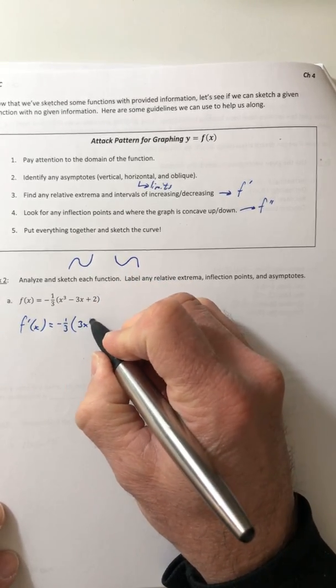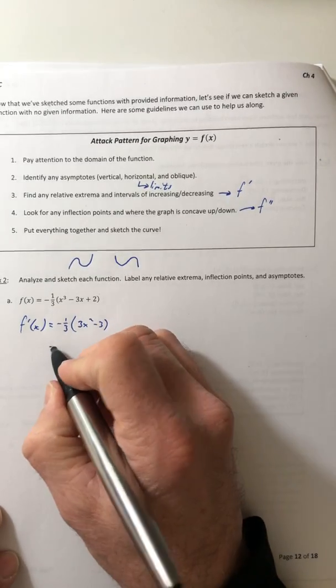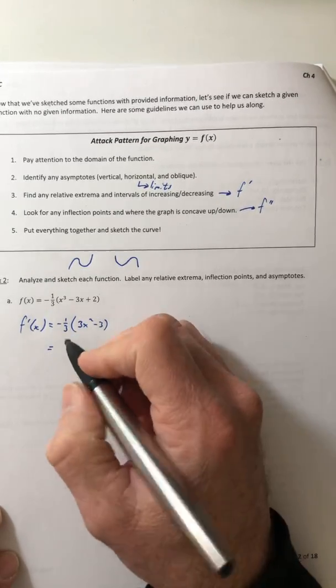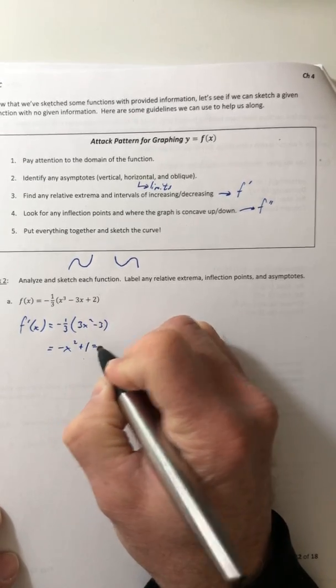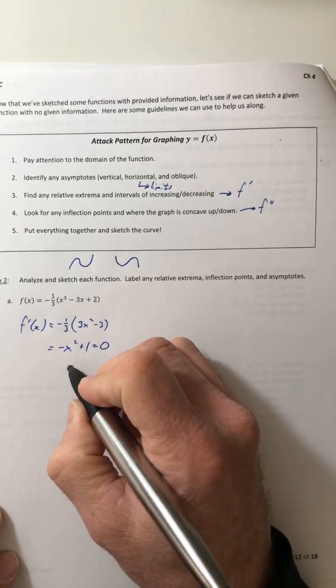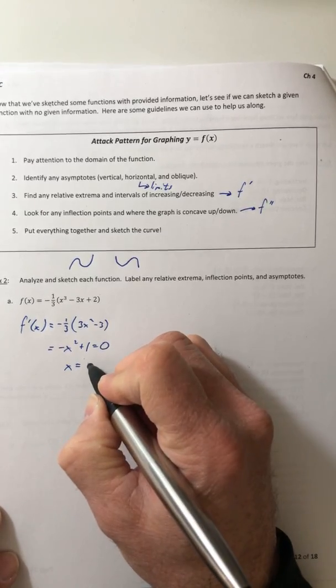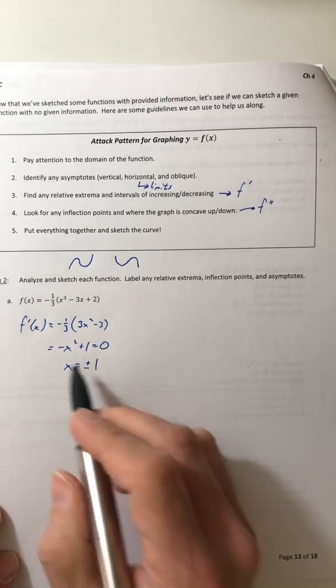So 3x squared minus 3. So if I multiply the negative one third in, negative x squared plus one is equal to zero. So if I solve that, x is going to equal plus or minus one. So these are my critical numbers.